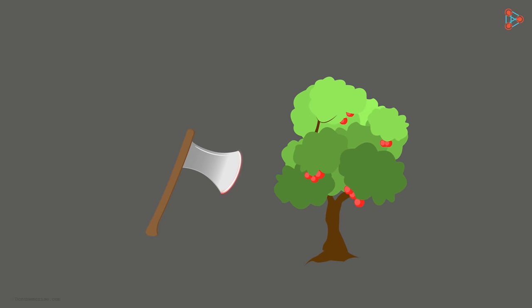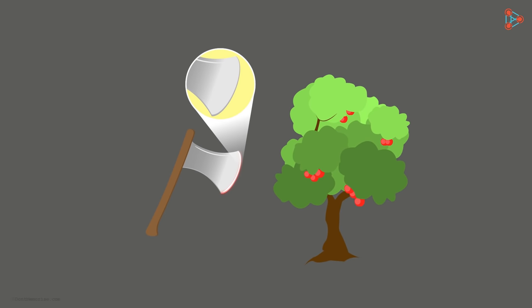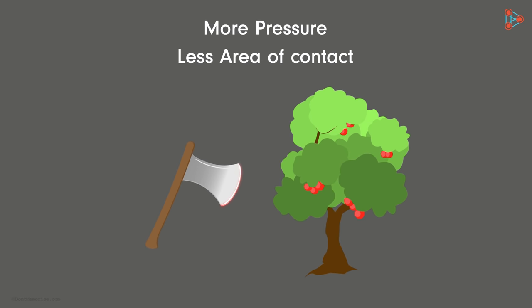Axes used to cut the trees also have sharp cutting edges instead of placid ones. It increases the pressure on the tree due to the less area of contact.